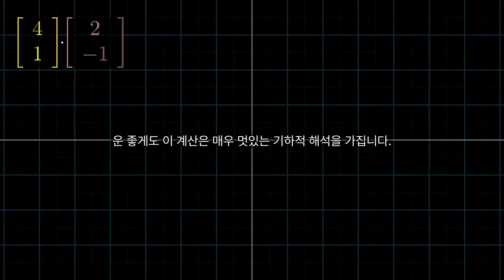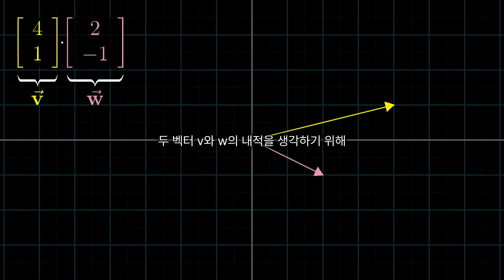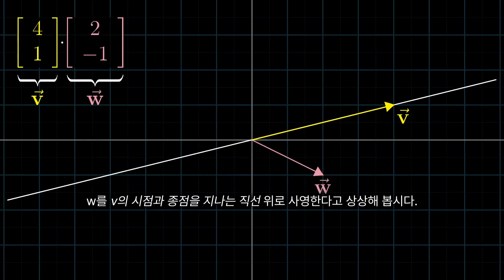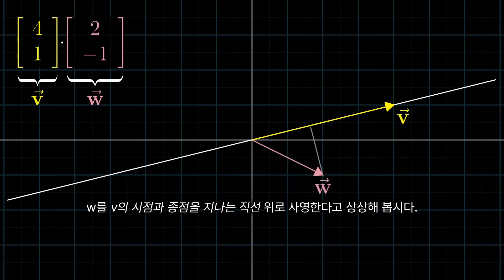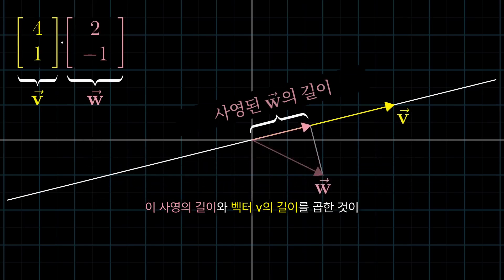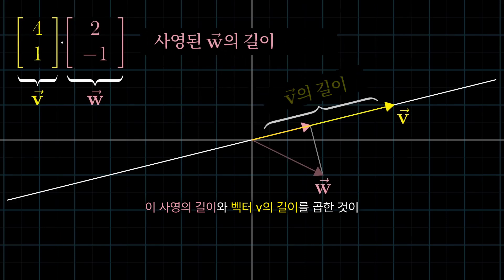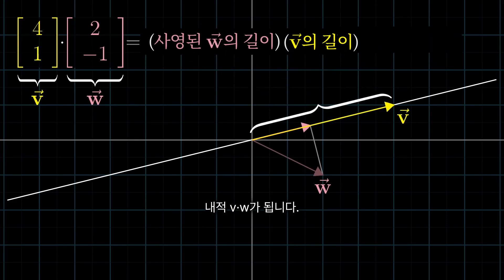Luckily, this computation has a really nice geometric interpretation. To think about the dot product between two vectors, v and w, imagine projecting w onto the line that passes through the origin and the tip of v. Multiplying the length of this projection by the length of v, you have the dot product, v dot w.